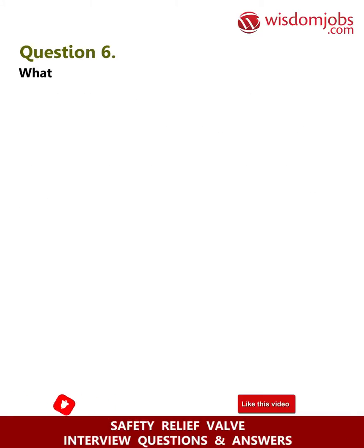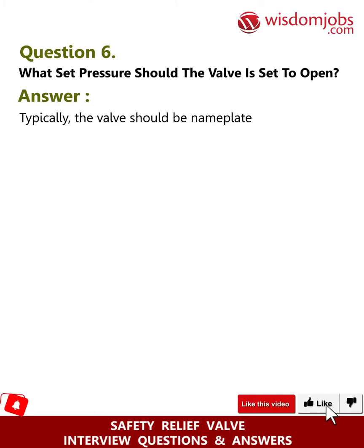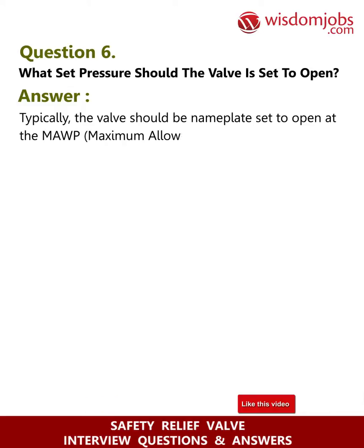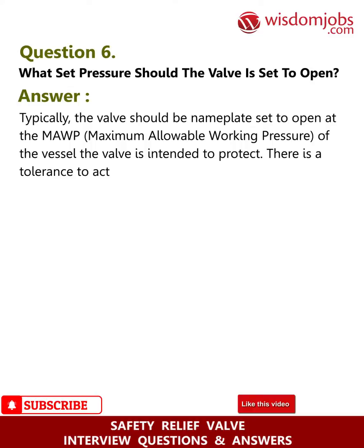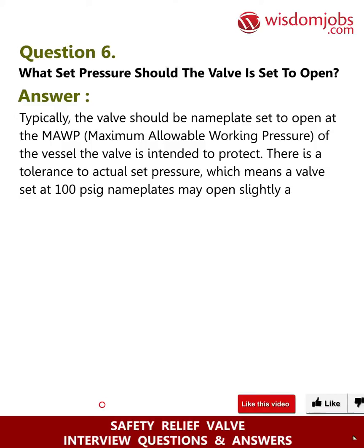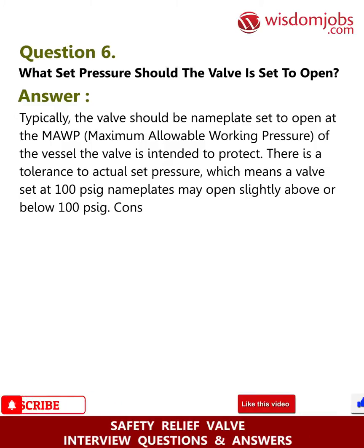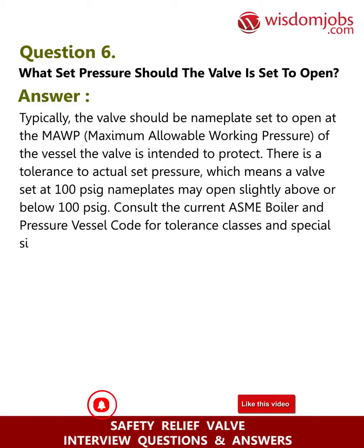Question 6: What set pressure should the valve be set to open? Answer: Typically the valve should be nameplate-set to open at the MAWP (Maximum Allowable Working Pressure) of the vessel the valve is intended to protect. There is a tolerance to actual set pressure, meaning a valve set at 100 PSIG nameplate may open slightly above or below 100 PSIG. Consult the current ASME Boiler and Pressure Vessel Code for tolerance classes and special situations where set pressure may differ from the MAWP.